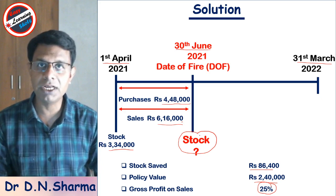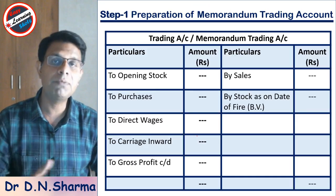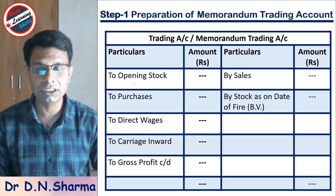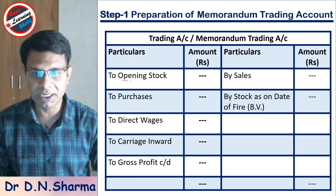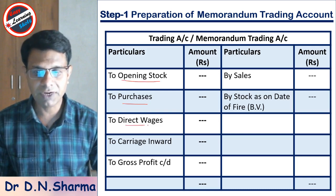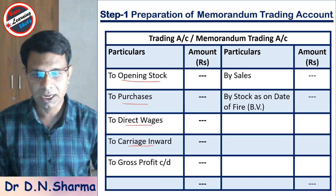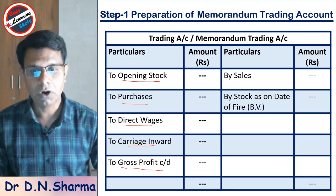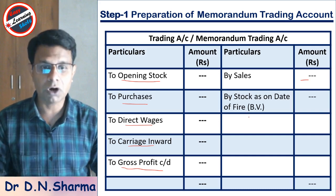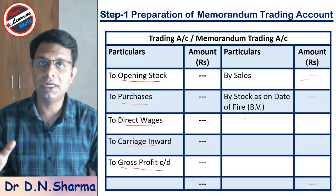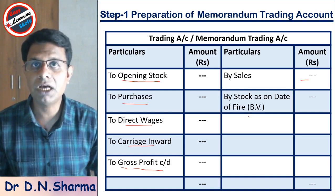We prepare the memorandum trading account to find out the value of stock present at the date of fire. The memorandum trading account is the same as the trading account — on the debit side we include all expenses such as opening stock, purchases, direct wages, and carriage inward. When the gross profit rate is given, we calculate gross profit and include it on the debit side as well. On the credit side we write sales, and the balancing difference between the total and sales gives us the stock present at the date of fire.